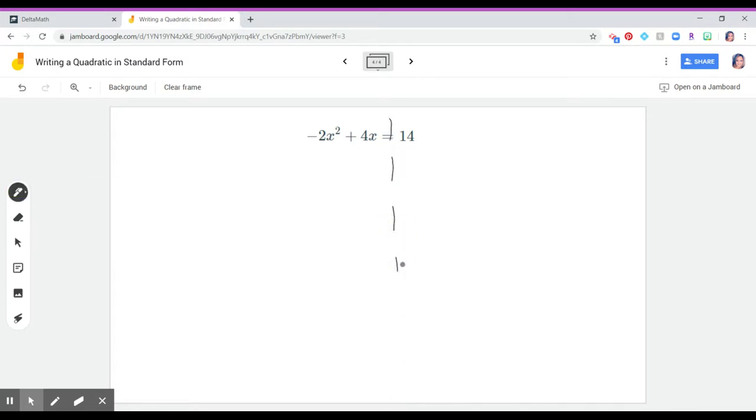Again, our goal is to equal zero. It's our hero. We always want this to equal zero. So since this is positive 14, I'm going to subtract 14 from both sides. And if you look, these are like terms. 14 minus 14 is zero.